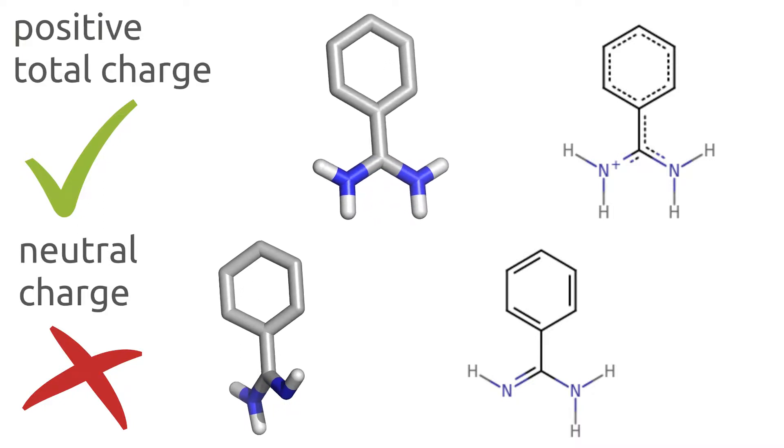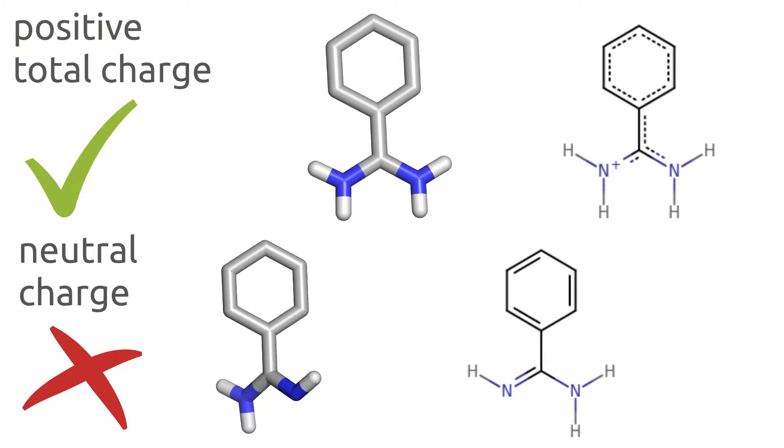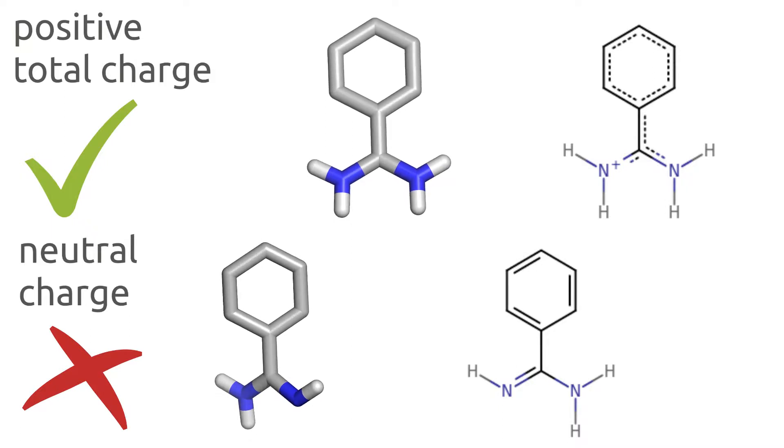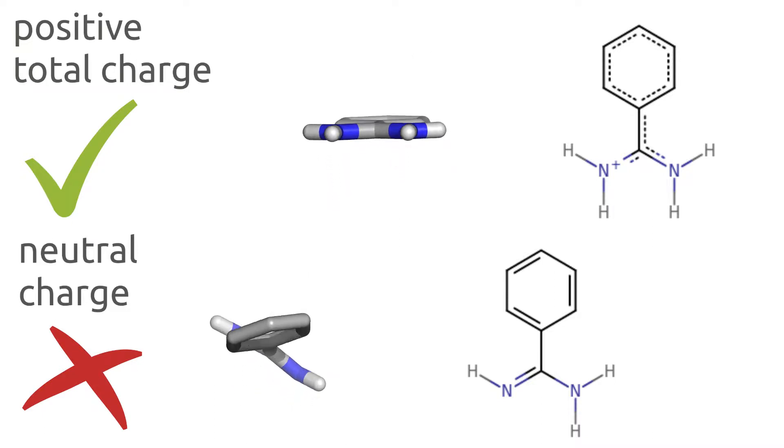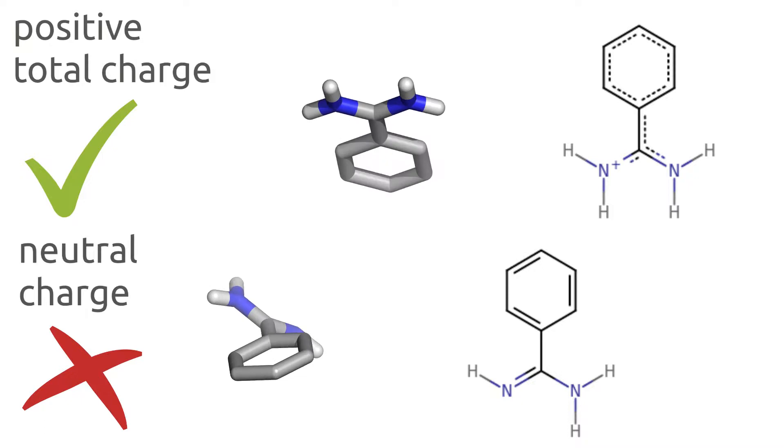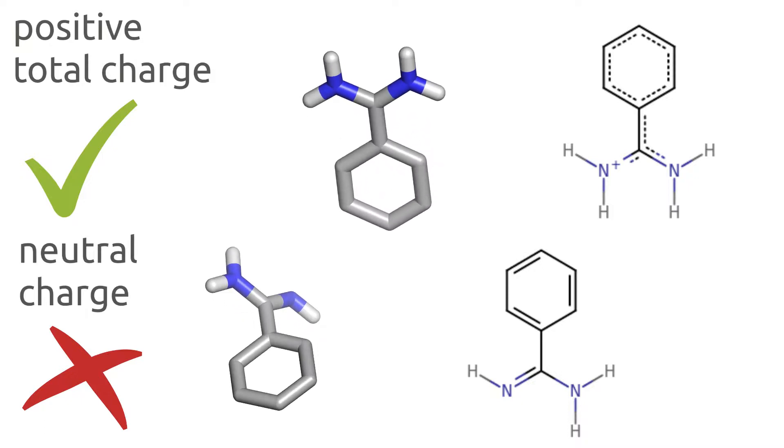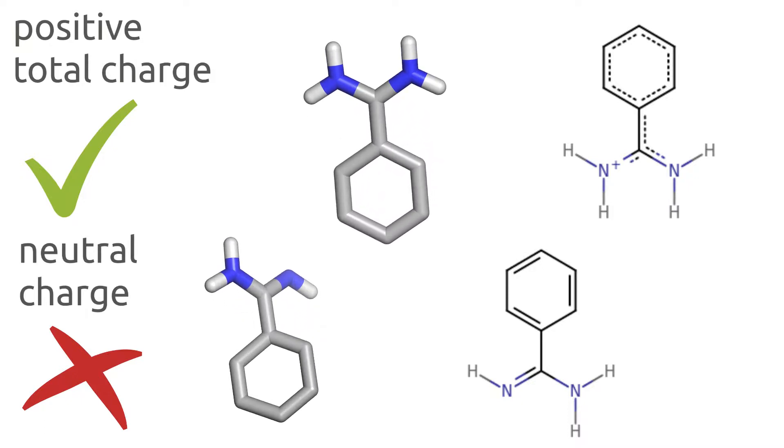Assigning the incorrect protonation state will further alter the state of the hydrogen bond donors and acceptors, which will limit the correct prediction of the protein-ligand interactions. Not to mention that an incorrect protonation will affect the 3D structure of the ligand, as you can see in the images and the short video clips below.